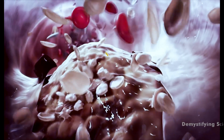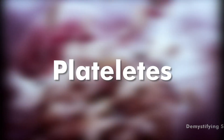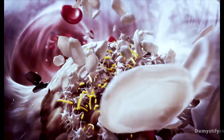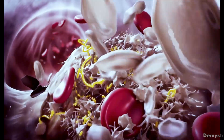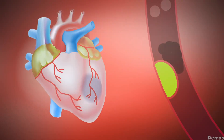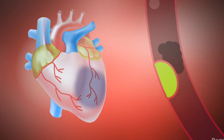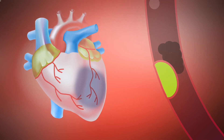Sometimes the plaque surface breaks or ruptures, and blood cells called platelets clump together at the site to try to repair the artery. This clump can block the artery, leading to a heart attack.